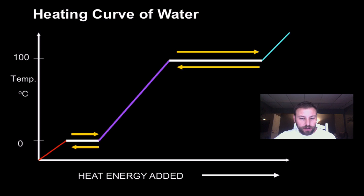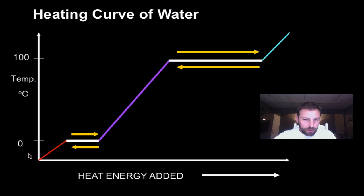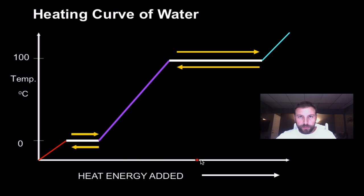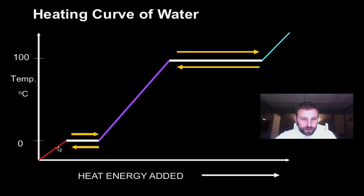This is a typical heating curve. What is shown here is temperature along our y-axis. We can see it goes from a little bit below zero degrees Celsius up to about 100 degrees Celsius and a little bit above that. On the x-axis, we have our heat energy added over a period of time. So we have heat energy added and it just keeps going and going. This is our heating curve of water, showing the addition of heat over a period of time with a change in temperature.